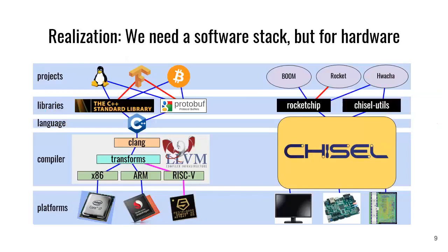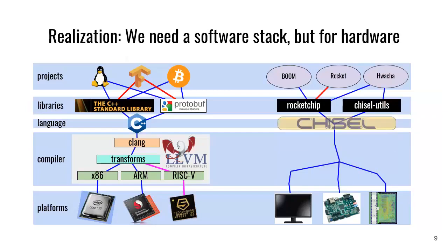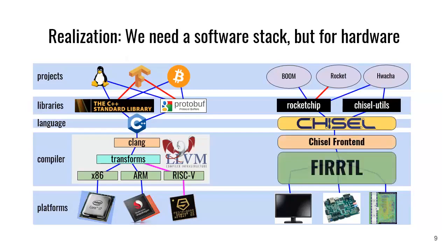We realized that software has the same problem. Software has a generic platform-independent project, but it can run on lots of different platforms and get specialized on the way down. The realization is that there's a compiler layer that lets us do this specialization for underlying platforms. Built upon that is a powerful language, built upon that is a set of libraries, and then projects. So we really realized we sort of got the top half with Chisel — the projects and the library layer with lots of different generators — but we had this monolithic Chisel. What we really wanted was to define a language, implement it with a front-end, and then have a compiler stack. This would enable us to do more and more RTL transformations.